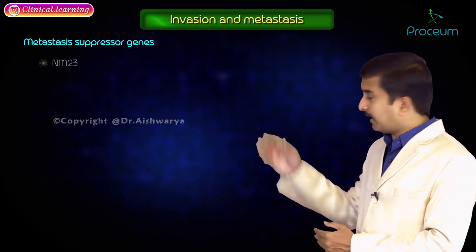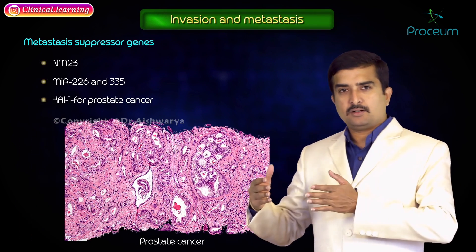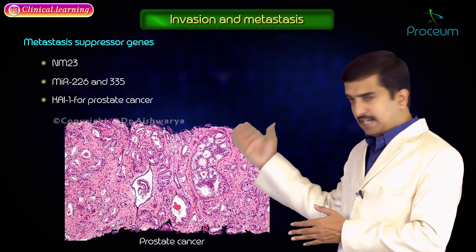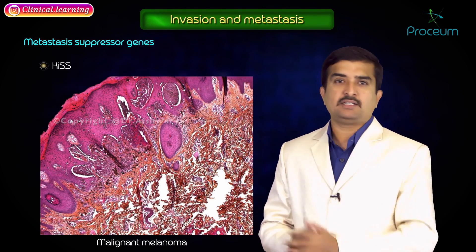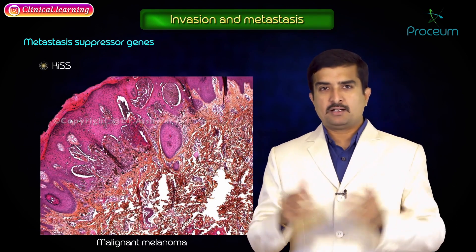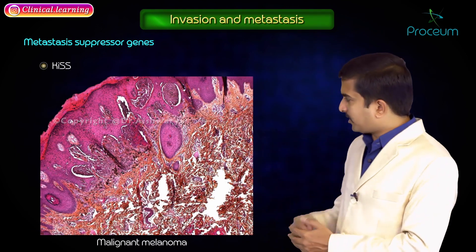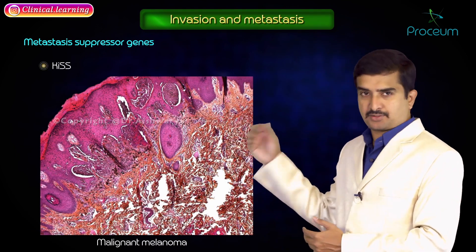The metastasis suppressor genes include NM23, MIR 226, and MIR 335. KAI1 is associated with prostate cancer, and KISS is associated with malignant melanoma.